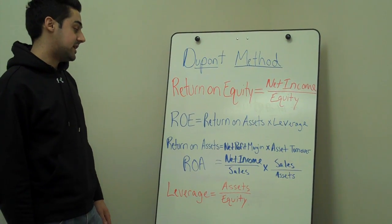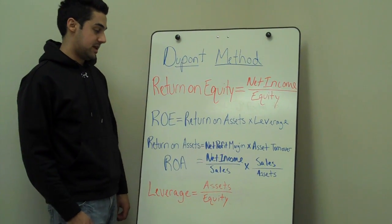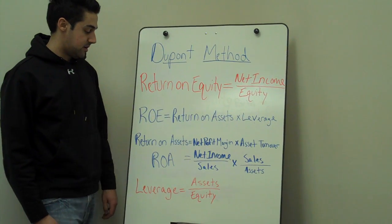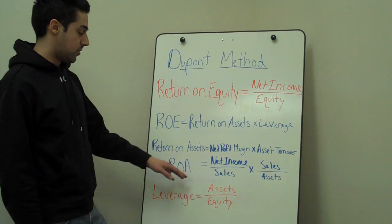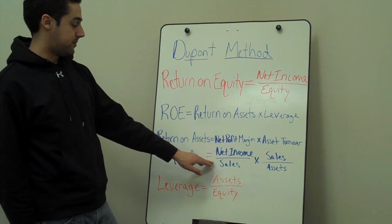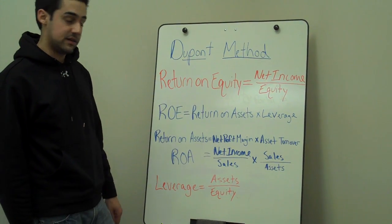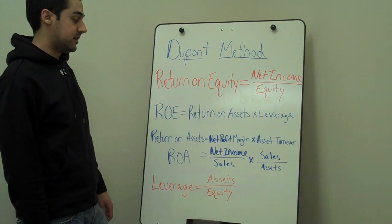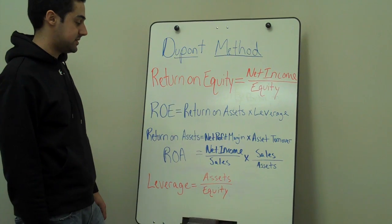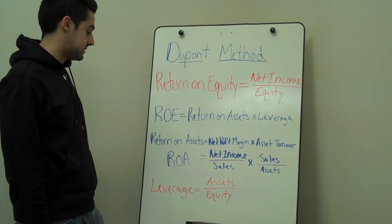Return on assets is net profit margin and asset turnover multiplied together. Broken down for return on assets: net profit margin is net income divided by sales, and asset turnover is sales divided by assets. We multiply those together for our return on assets.